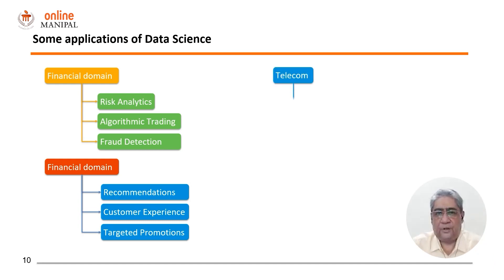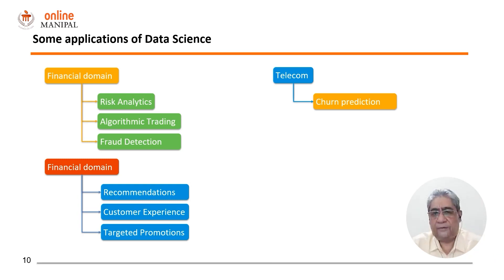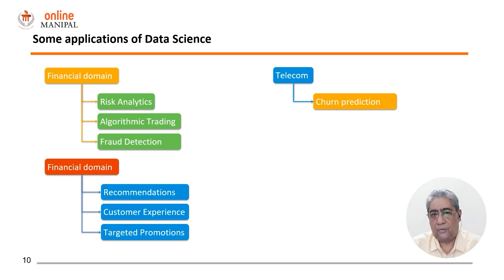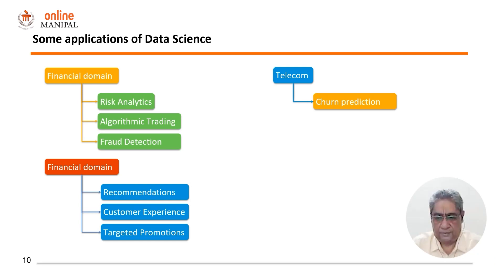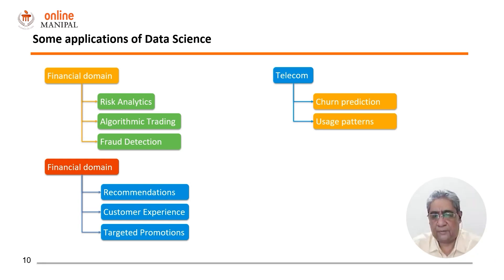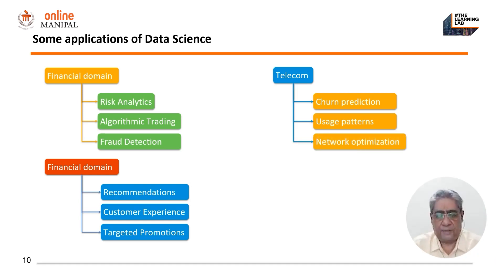In the telecom industry, churn is a big challenge, and data science principles come in handy for churn prediction — identifying customers who might churn and then providing them with extra services so that they remain with the organization. Usage patterns of calls and network optimization are some of the other areas where the telecom industry is using data science and predictive analytics modeling.